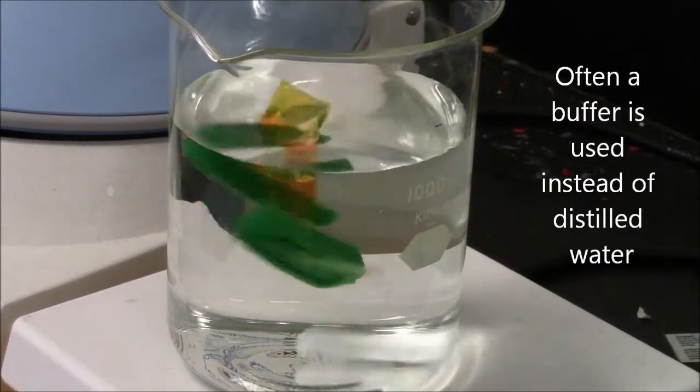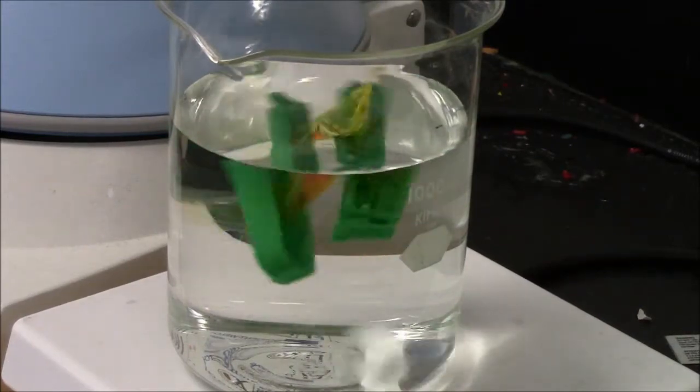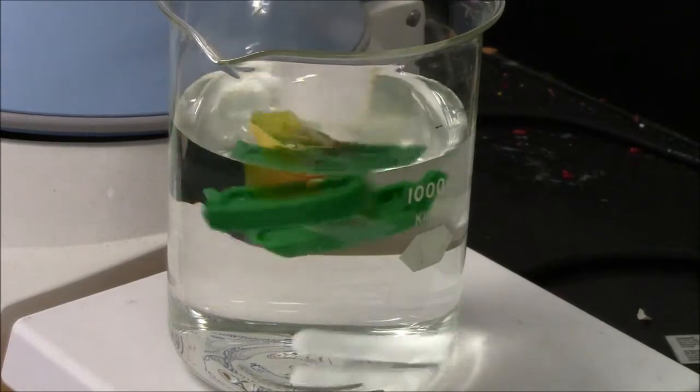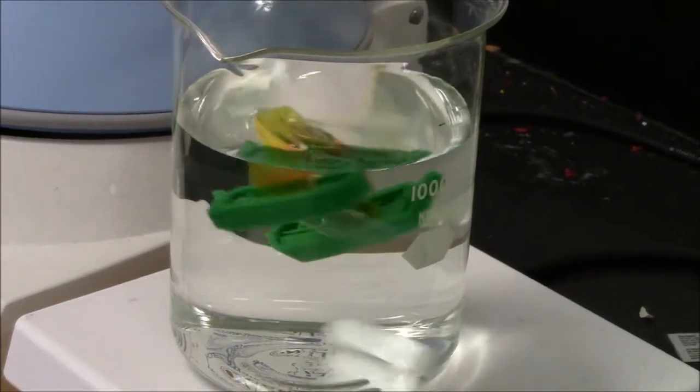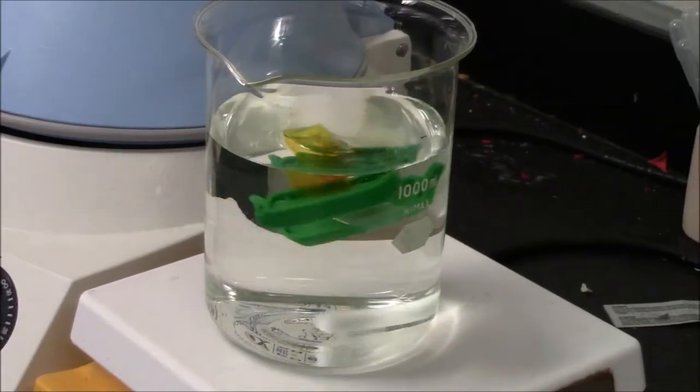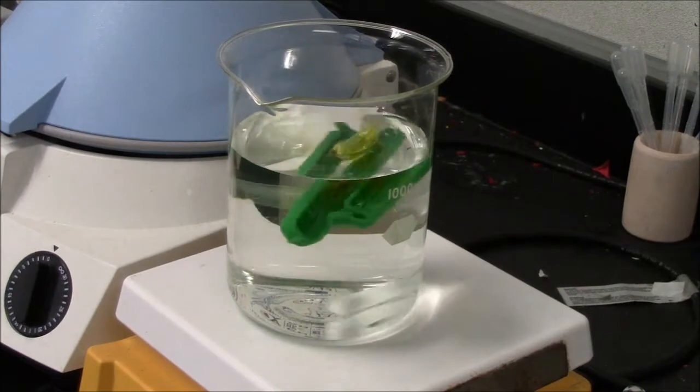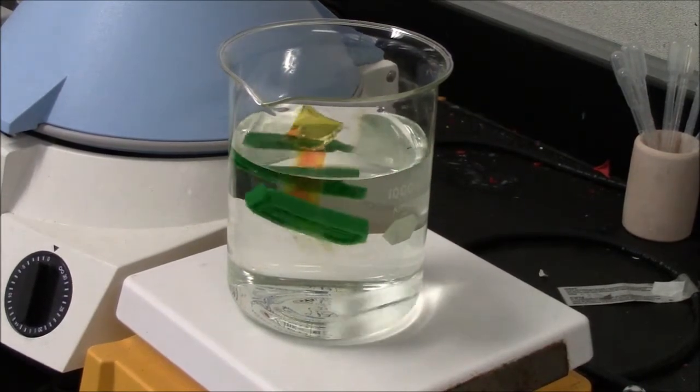So there we go. That stir rate is a little fast. We want it to slow down. That looks about right. So it's gently stirring in the large beaker. All the small molecules will leak out slowly. It takes a long time for it to reach equilibrium. That's what it should look like.